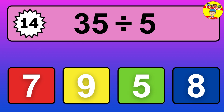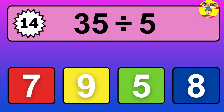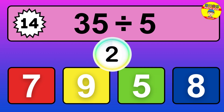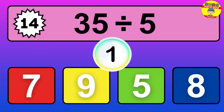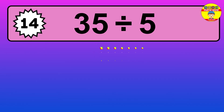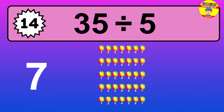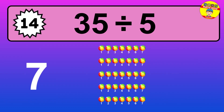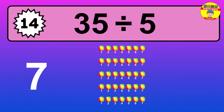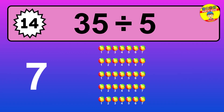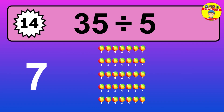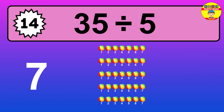35 divided by 5 — it's time to think. Let's go to the solution. Divide the number 35 by 5. Each group contains 5 units, so dividing 35 by 5 results in 7 equal groups. Thus, the result is 35 divided by 5 equals 7.